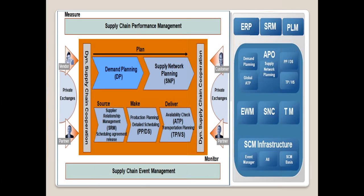In SAP Supply Chain Management, there are several modules: APO is one module, Extended Warehouse Management is another, SNC — Supply Network Collaboration (earlier called ICH, Inventory Collaboration Hub) — is another module, plus Transportation Management, Event Management, and other remaining modules. APO itself has sub-modules: Demand Planning, Supply Network Planning, and Production Planning and Detailed Scheduling.